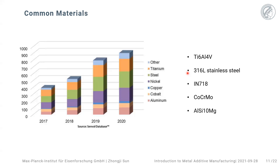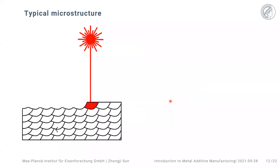The second group of materials is steels, which are used extensively for structural reasons. For high-temperature applications there are also many nickel superalloys. Other materials include cobalt-chromium, mainly used for dental implants, and aluminum for lightweight structures. Overall, in my opinion there is still a huge gap in terms of the number of different material types that can be designed and used by the AM community — a very interesting area for metallurgists.